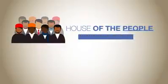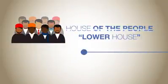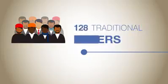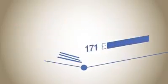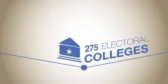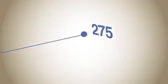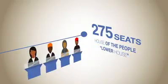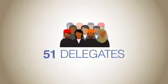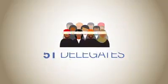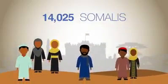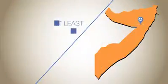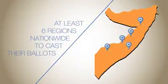In the case of the house of the people, or the lower house, the process will begin with a group of 135 traditional elders who will choose the members of the 275 electoral colleges. Each electoral college will then vote for one of the 275 seats at stake in the house of the people. There will be 275 electoral colleges, each consisting of 51 delegates. A total of 14,025 Somalis will therefore participate in the electoral colleges, and they will gather in at least six regions nationwide to cast their ballots.